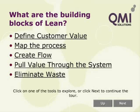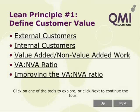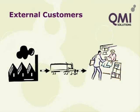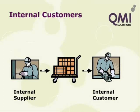The first principle is customer value — specify value from the standpoint of the end customer for each product family. A product family is a group of products sharing the same manufacturing process, and each represents a value stream. Next, mapping the process: identify all the steps in the value stream and eliminate those that do not create value. The third principle is flow — make value-creating steps occur in tight sequence so the product flows smoothly toward the customer. Pull: as flow is introduced, let customers pull value from the next upstream activity. The last principle is the relentless pursuit of perfection by eliminating waste — identify and eliminate waste wherever it is found, and repeat the Lean process until a state of perfection is reached in which value is created with no waste.